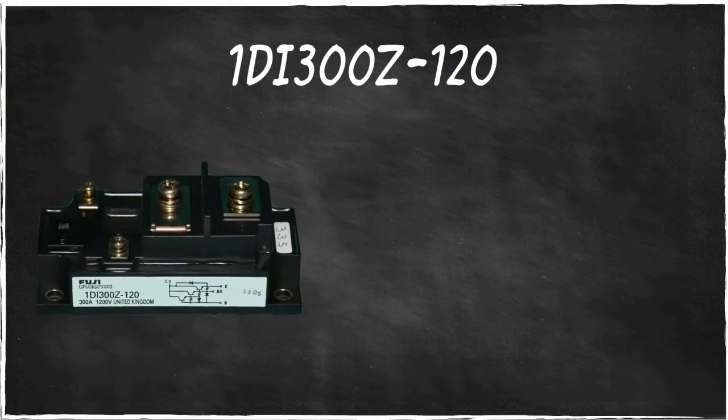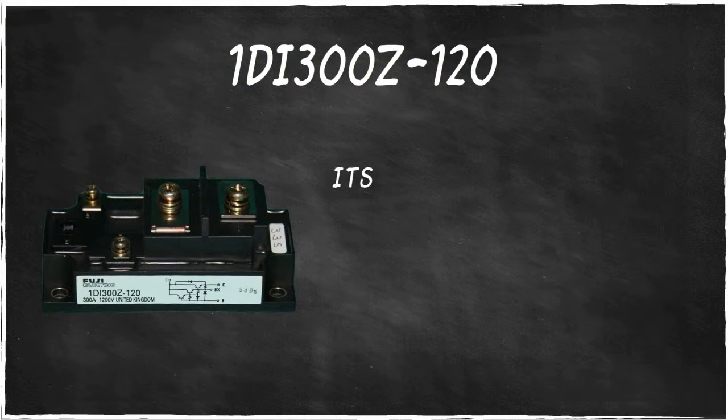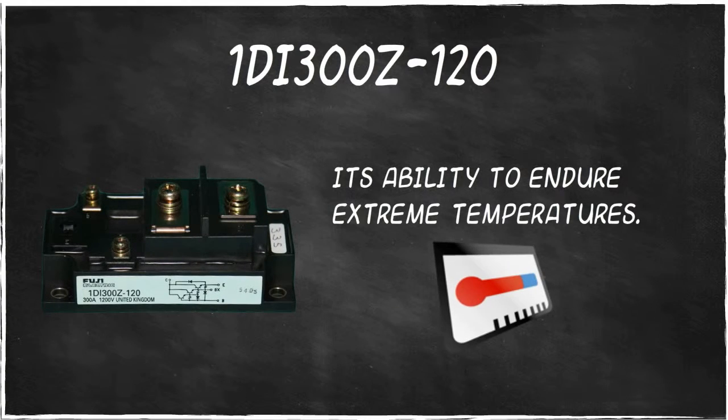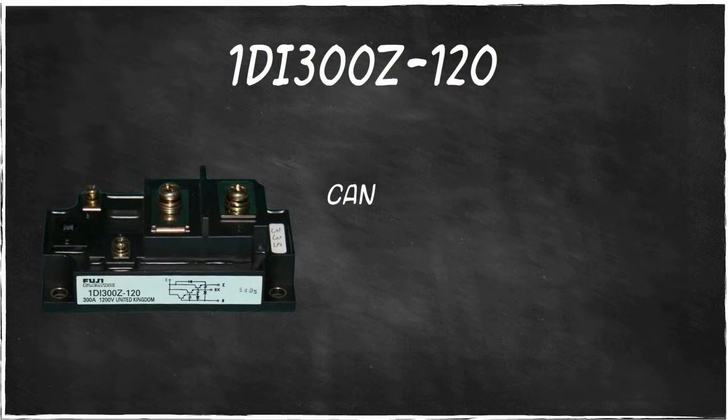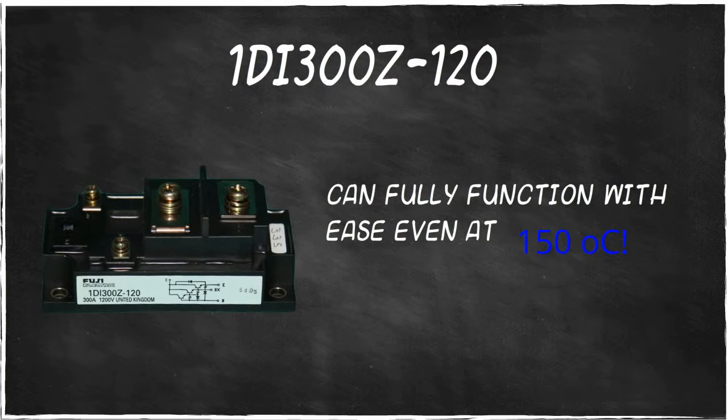One of the best features of 1DI300Z120 is its ability to endure extreme temperatures. Whether on storage or junction temperature, this power module can fully function with ease even at 150 degrees Celsius.